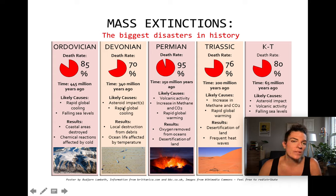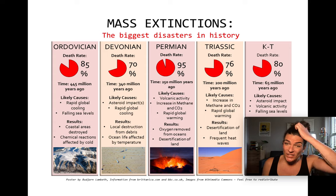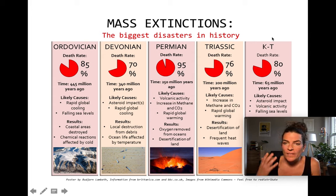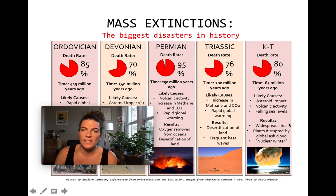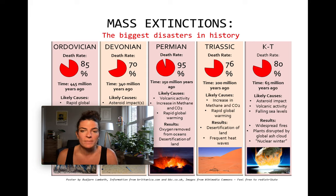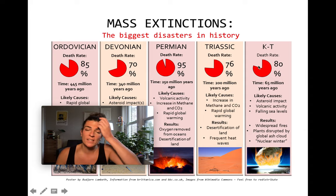The Devonian extinction was likely caused by an asteroid and then rapid global cooling. The Permian extinction was caused probably by a combination of volcanic activity, increases in CO2, and rapid global warming. Then the Triassic extinction, which was kind of mid-dinosaur period. And of course the KT extinction at the end of the Cretaceous — the most famous extinction, the extinction of the dinosaurs 65 million years ago — caused by an asteroid impact and volcanic activity combining to result in falling sea levels and changes to environmental conditions. You have widespread fires, plants disrupted by a global ash cloud and a nuclear winter — a very abrupt, short period of very cold temperatures due to obscuring of the sun. That results in about 80% of all species going extinct.